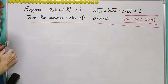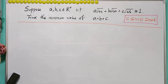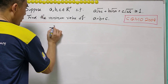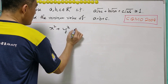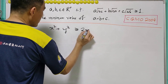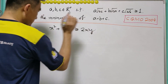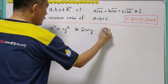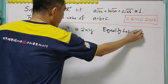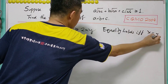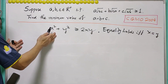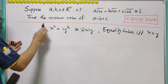For this question, we just need to use the AM-GM inequality on two terms. That is, x squared plus y squared is greater than or equal to 2xy, where equality holds if and only if x equals y. We have to use this result again and again.